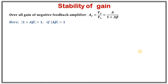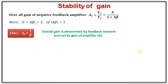For negative feedback, 1 plus Aβ should be greater than 1. But let's assume a condition such that Aβ is much, much greater than 1. In that case, we can neglect 1 in the denominator, and thus AF is approximately equal to 1 over β. Notice that there is no A present in this expression — the gain of the internal amplifier does not appear. What decides the gain of the negative feedback amplifier is β. Therefore, the overall gain is determined by the feedback network, not by the gain of the amplifier. So even if some parameters of the internal amplifier change, the gain won't be affected.